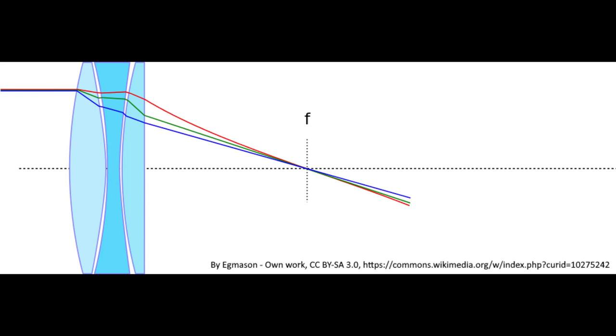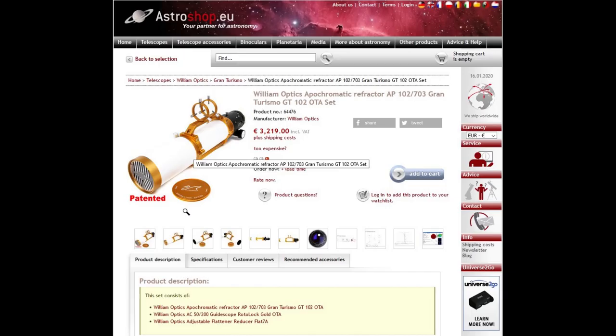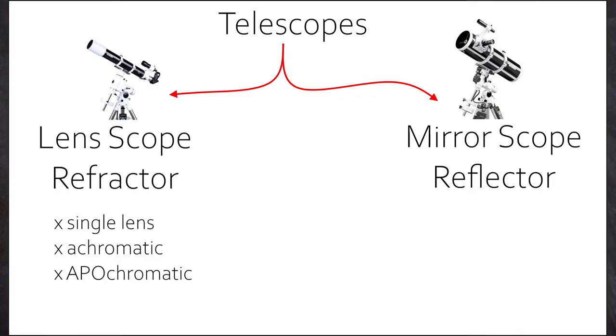You can see triplets down to f4 or something. Downside? They are incredibly expensive. Upside? You tend to get beautiful images. So whatever. These are the lens scopes. Single lens, achromatic and apochromatic refractors.